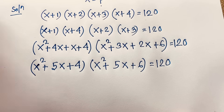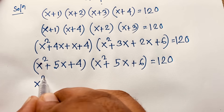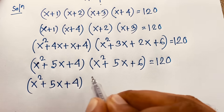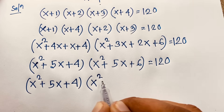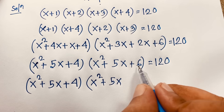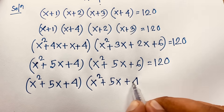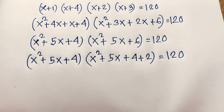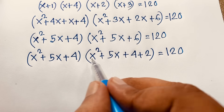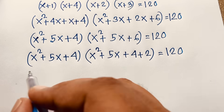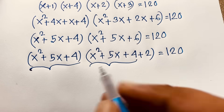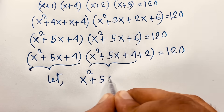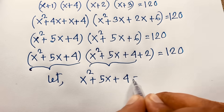You can see that x²+5x+4 appears in the first factor, and in the second factor x²+5x+6 = (x²+5x+4)+2. Both expressions share the core x²+5x+4, so I substitute m = x²+5x+4.